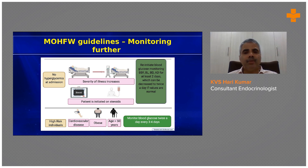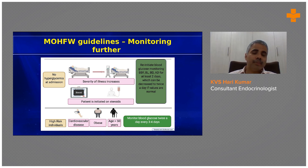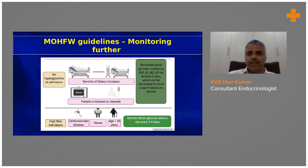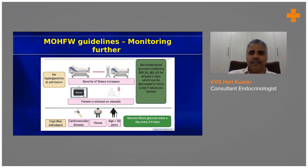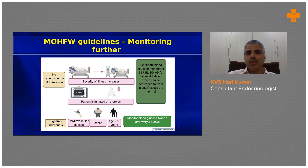For a patient admitted to a ward, the doctor may not focus as much, so it's important to know that as severity of illness increases and the patient is initiated on steroids, glucose should be monitored at regular intervals — maybe every second or third day. For high-risk individuals such as elderly patients with comorbid ailments, monitor twice a day every three to four days to pick up early and treat.